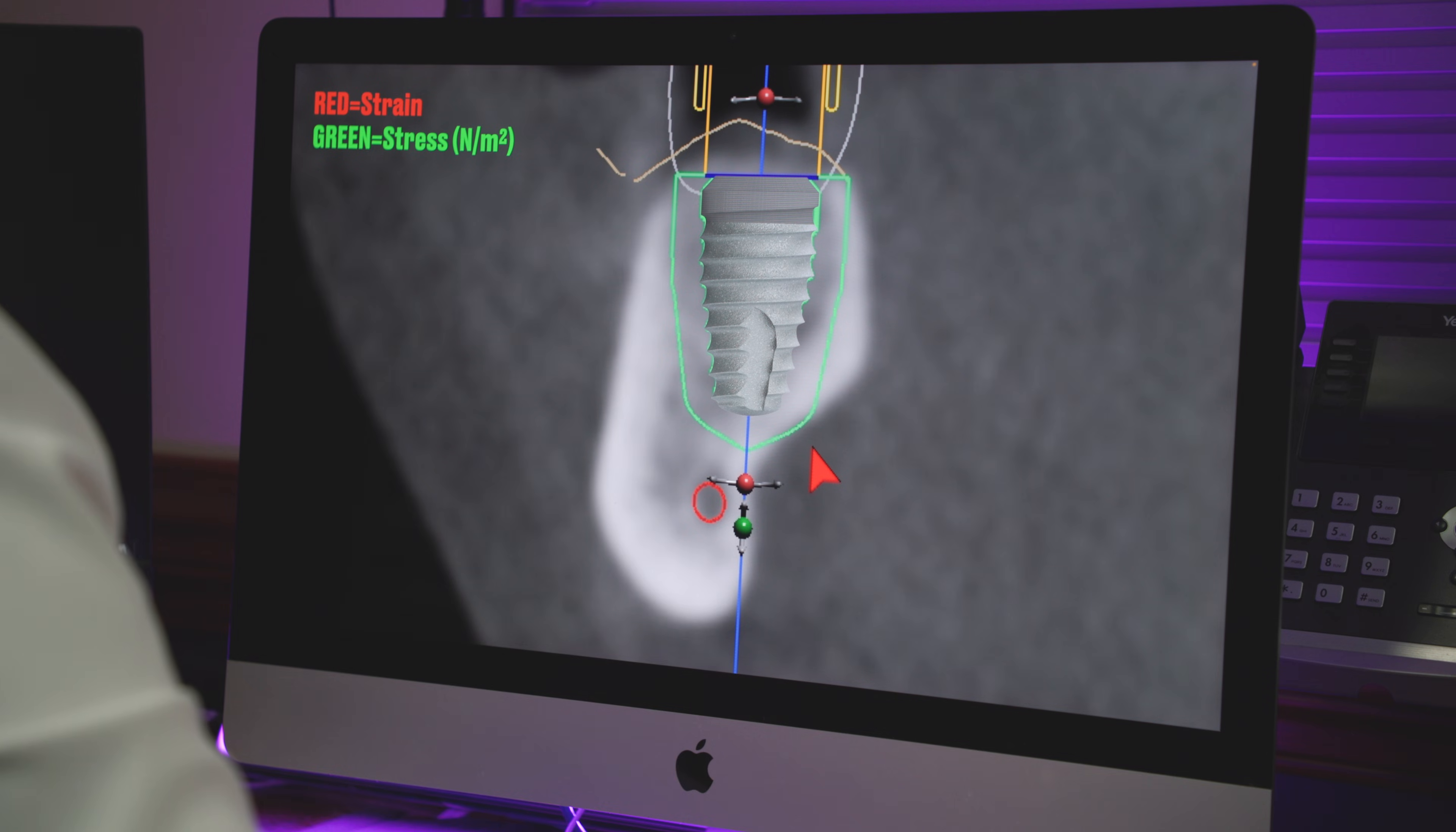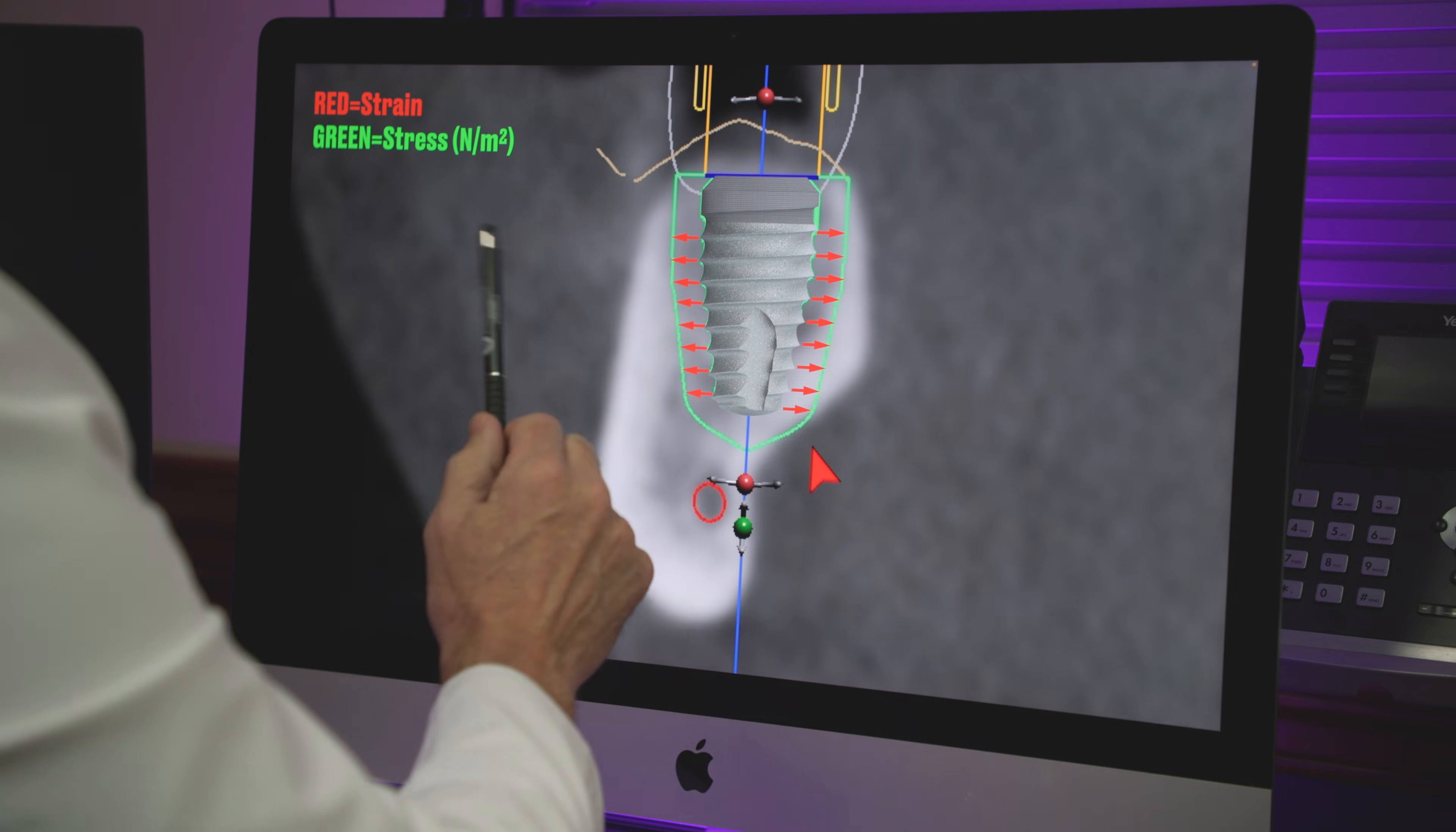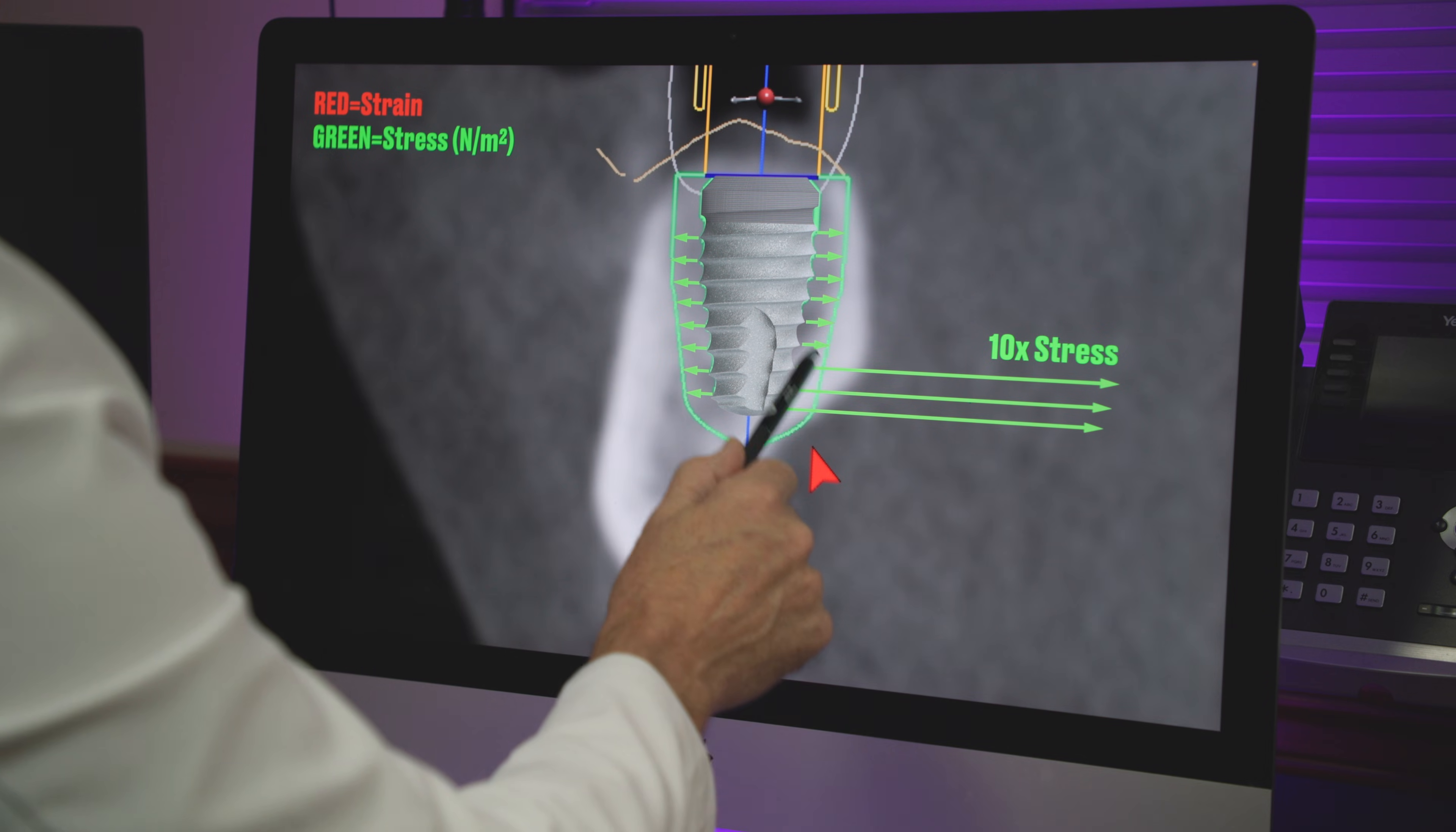So if I drop an implant in, what you see is these three threads right here are engaging the dense cortical plate of the undercut, but this is all soft bone. So let's follow the same logic. Everywhere you see a red arrow, the bone has been strained or displaced an equal amount. But if we change the red to green for the stress, the stress is small across all of these threads and it's small across all of these threads, but these three threads will have a tenfold magnitude increase in stress. It's ten times more stress than this and this is a graphical representation of the difference. If this is one, this is 10x.